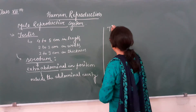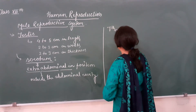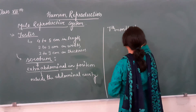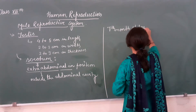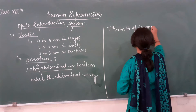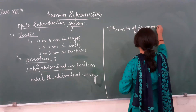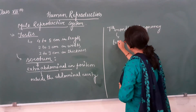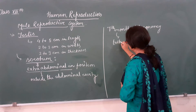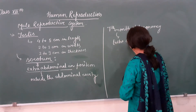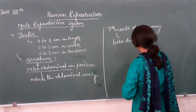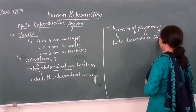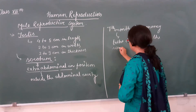During the 7th month of pregnancy, the testis descends into the scrotum.